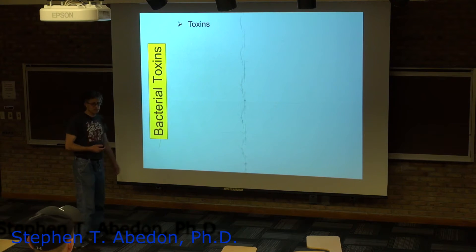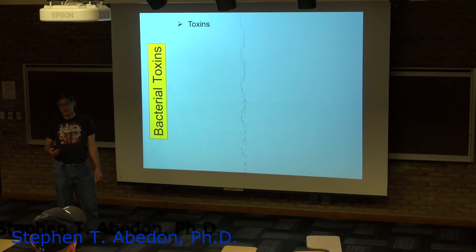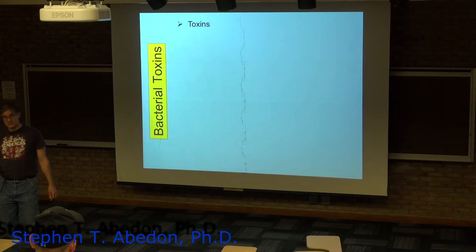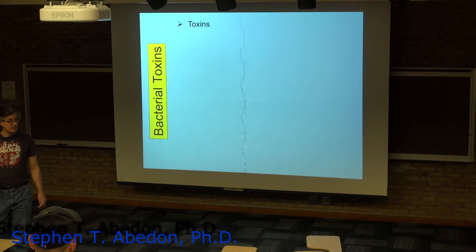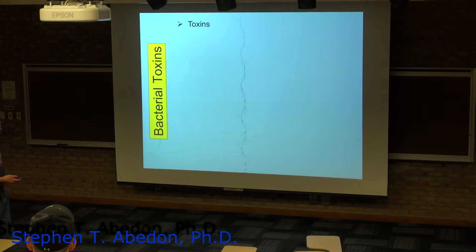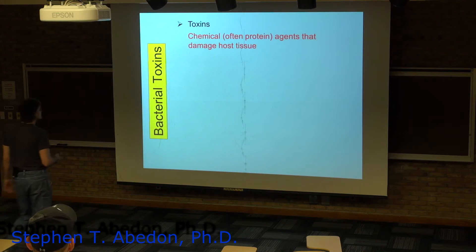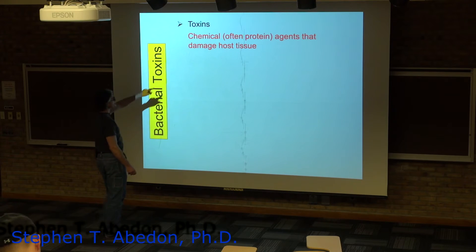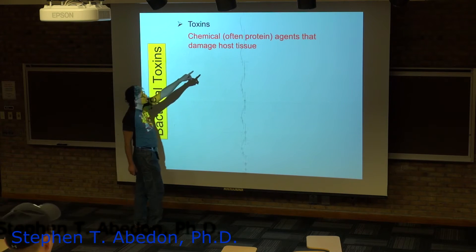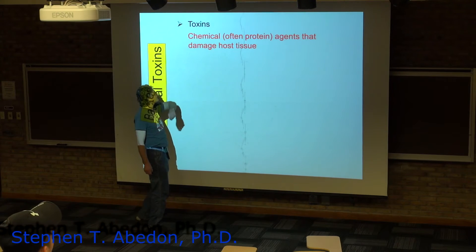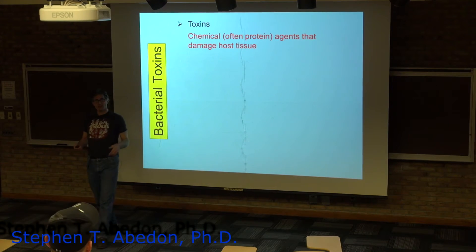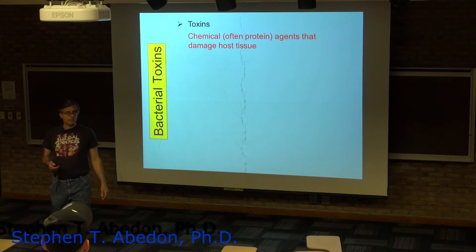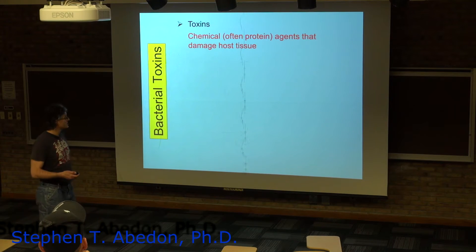Where do the diseases come from? One of the important contributors to diseases in many cases, not all, is the production of toxins. So these toxins are chemicals — they're often proteins but not always — and they tend to change the host tissue, or tissues, in some way.